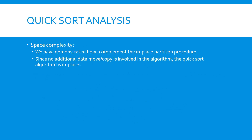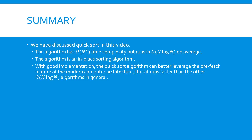For space complexity, recall that we discussed the in-place partition procedure earlier in this video. Since no other data copying is involved in the algorithm, we claim that the quicksort algorithm is an in-place sorting algorithm. In summary, the quicksort algorithm runs in O(n²) time in the worst case and O(n log n) on average. It is also an in-place sorting algorithm. Finally, we know that when implemented properly, the quicksort algorithm can run faster in practice than the other O(n log n) sorting algorithms, such as heapsort and mergesort.